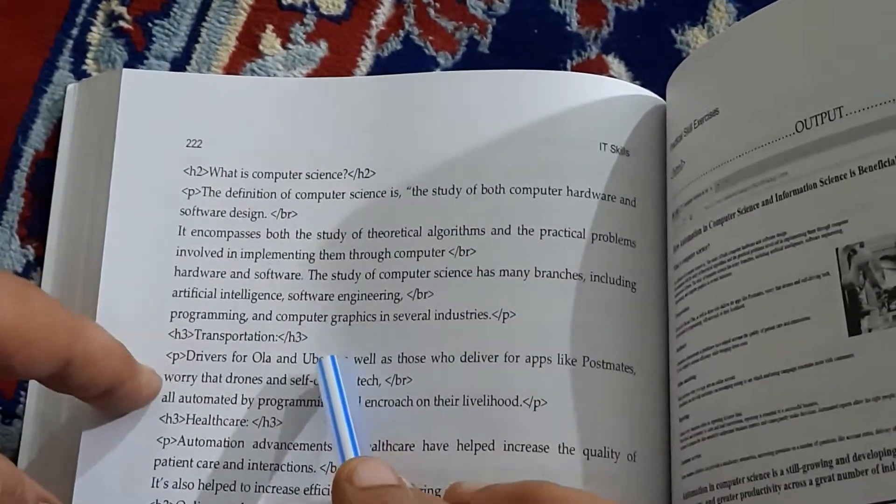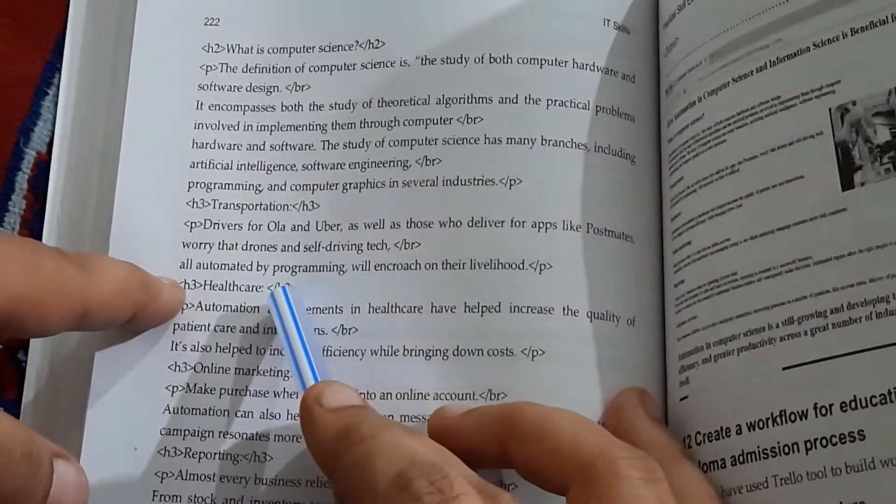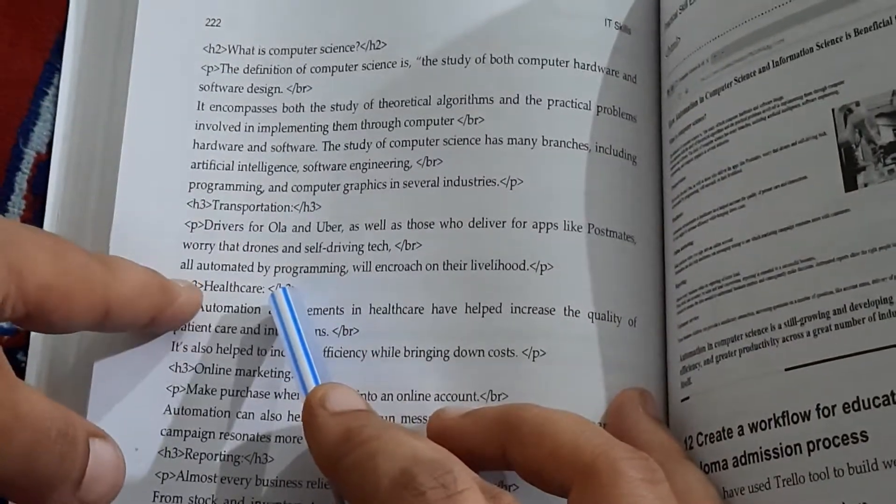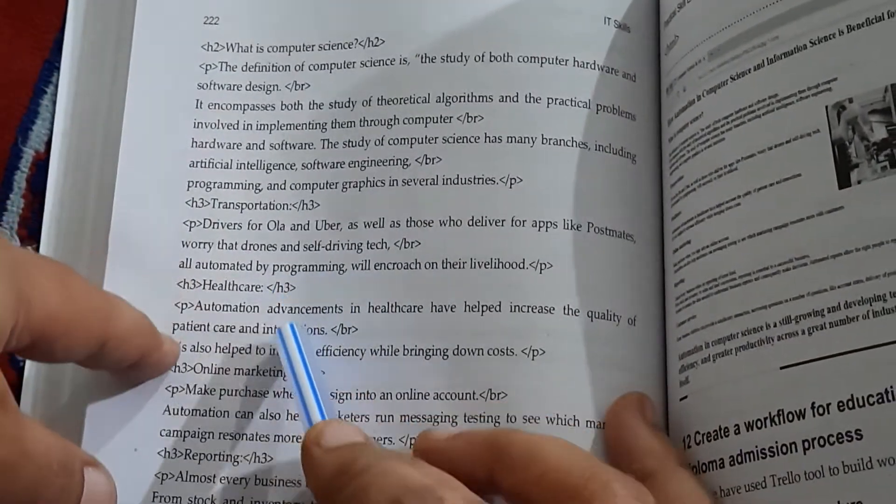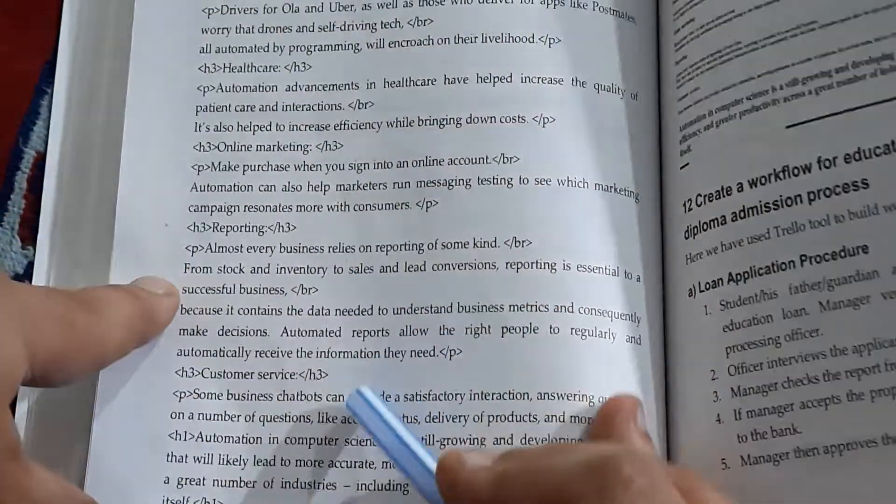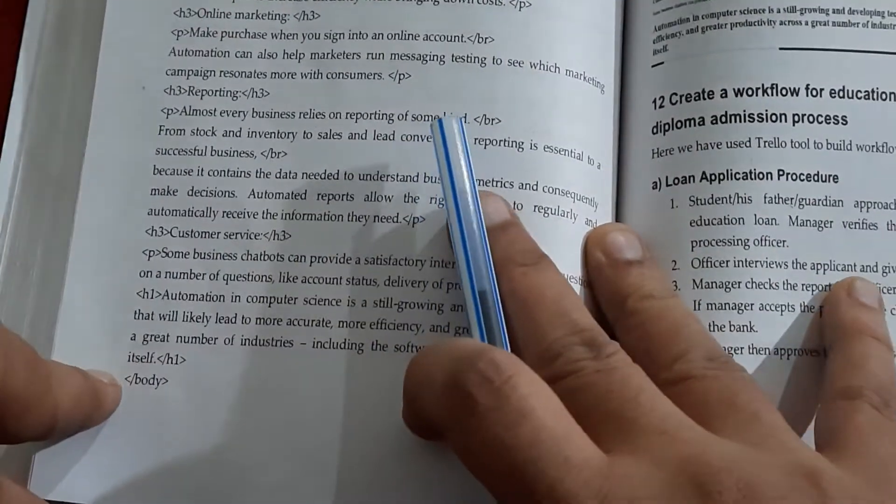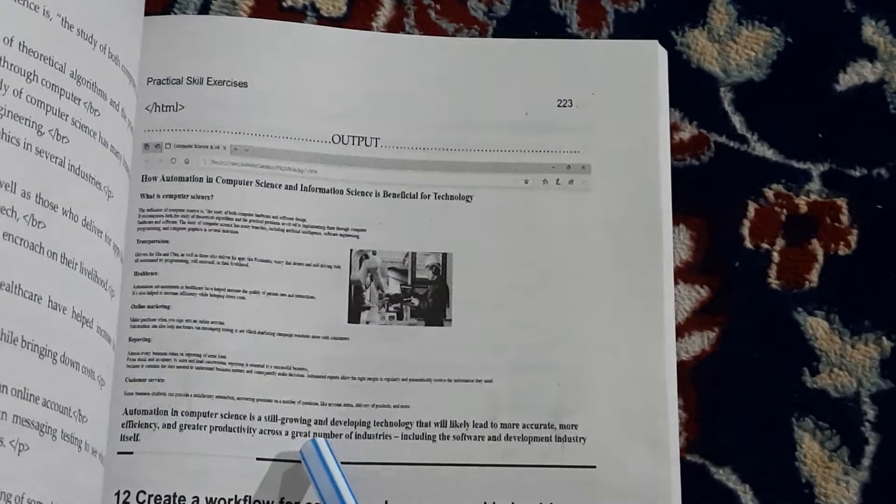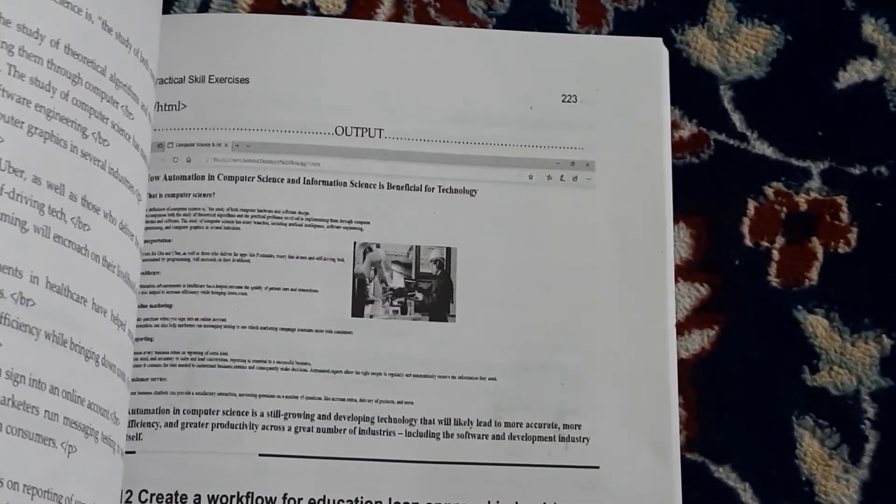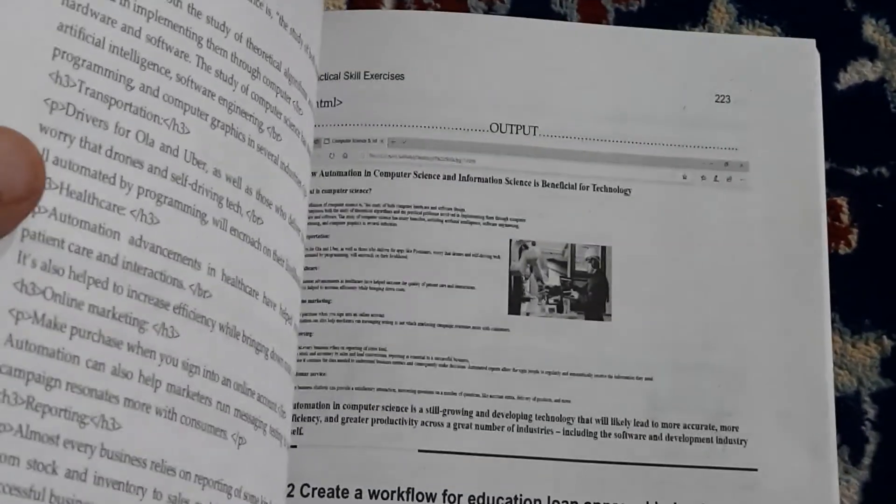Transportation, healthcare - these are the applications of business process automation. So this is the heading, and then the details, heading then the details. Similarly, you're giving many, and then you're closing the body tag. So all your contents will be displayed like this. I hope you understood it. Do share this with your friends. Thank you.